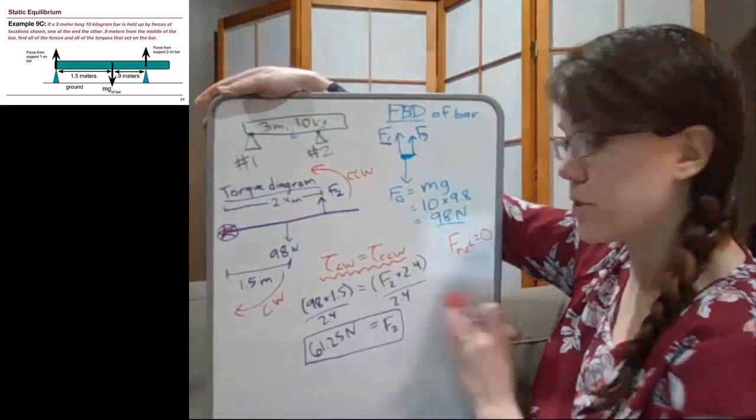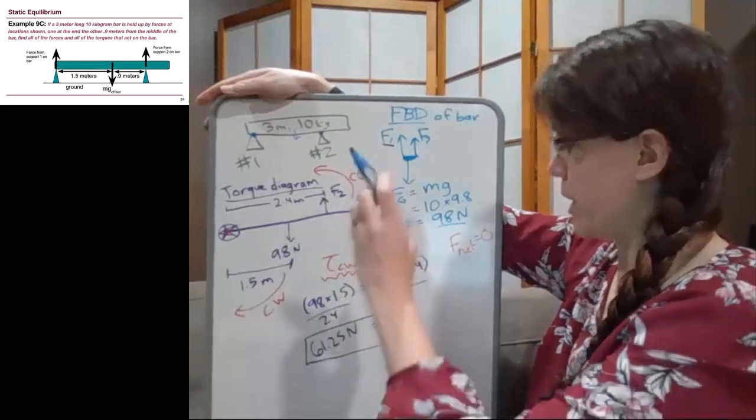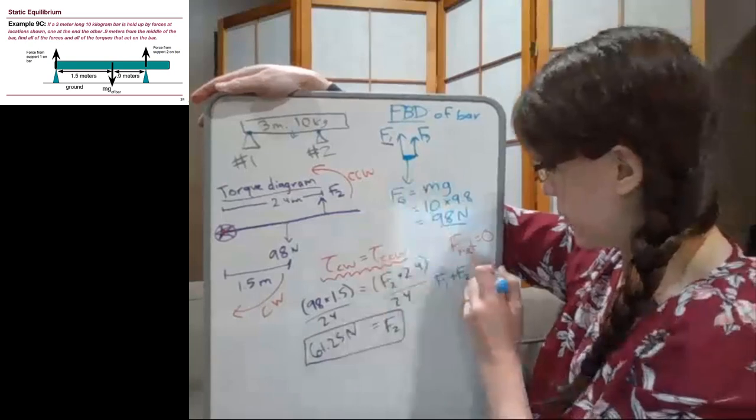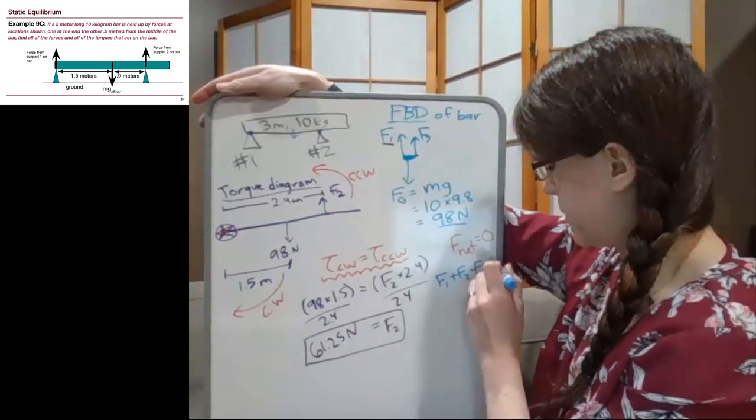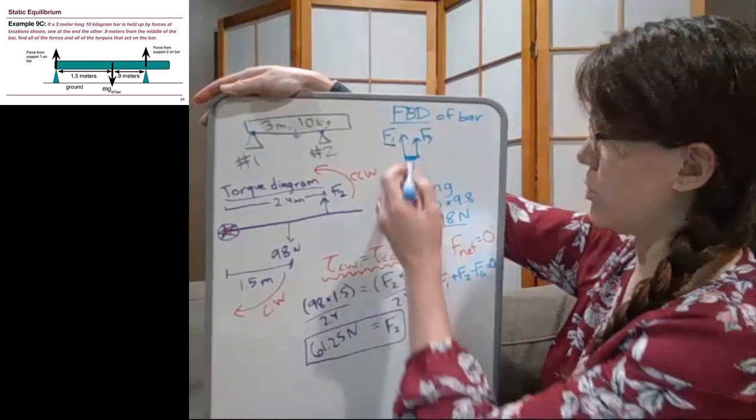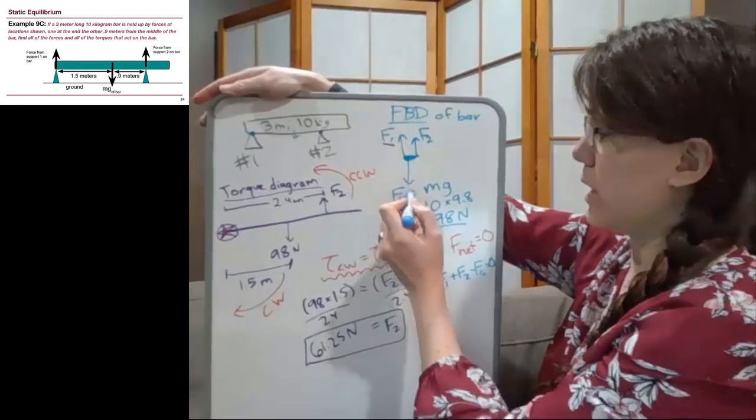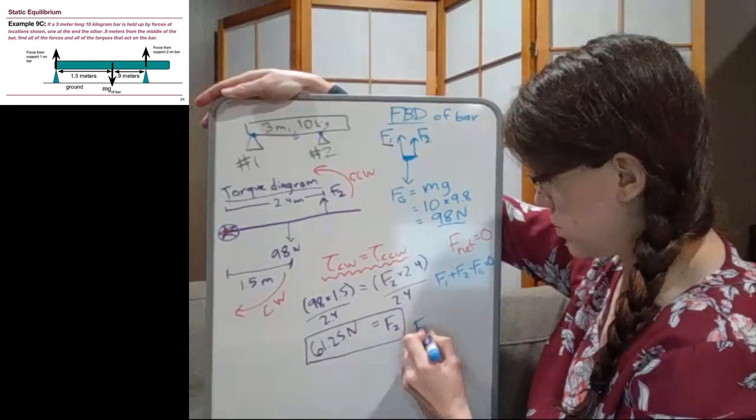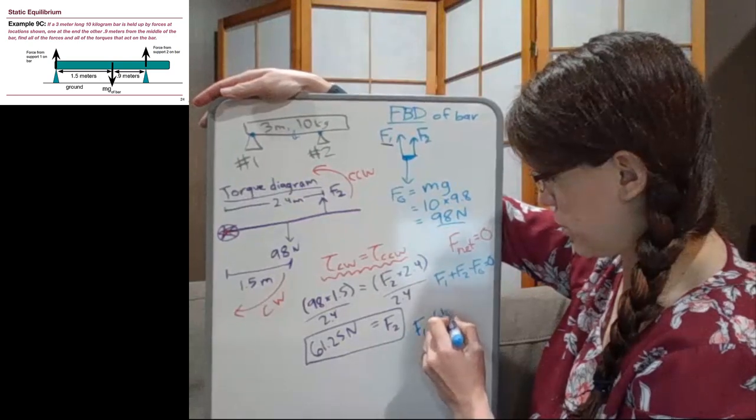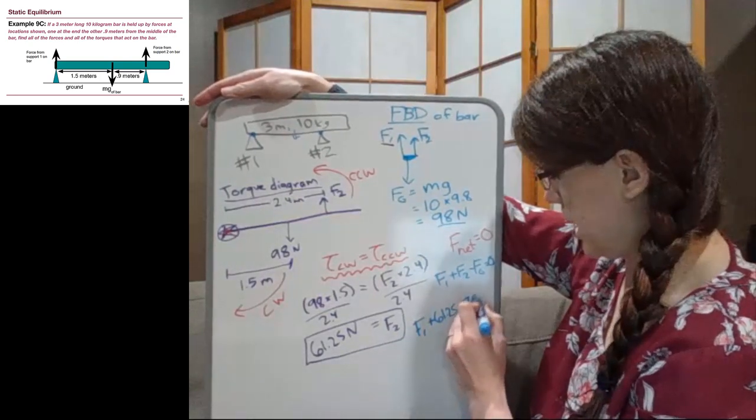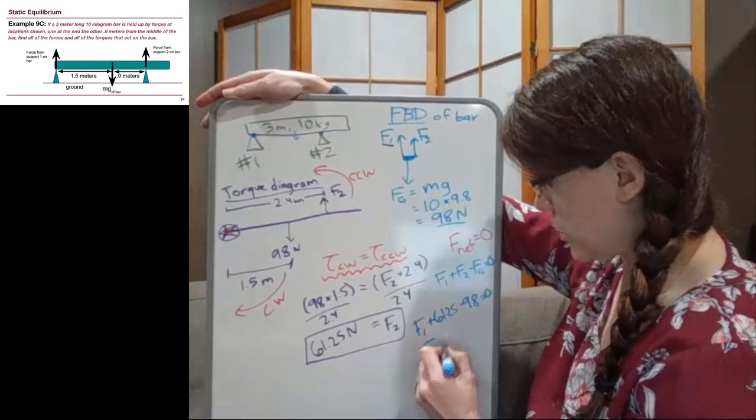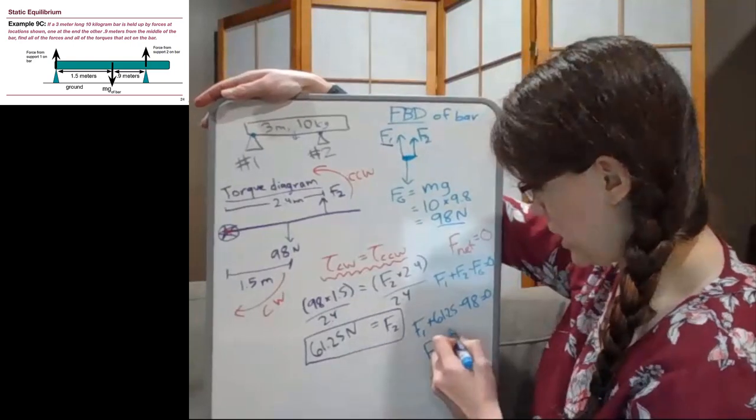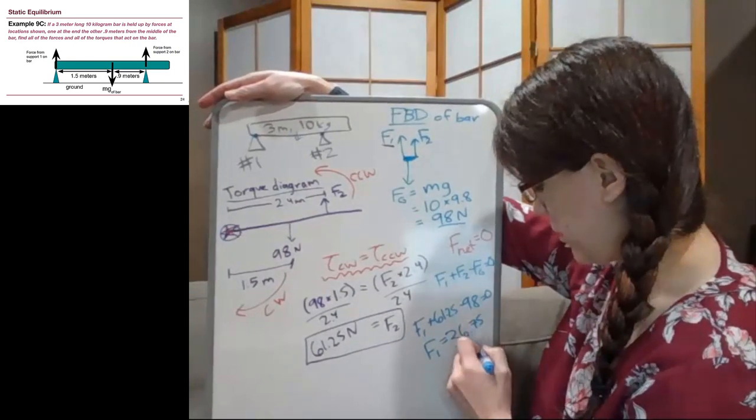And so we do that by considering the other condition for static equilibrium, which is that the net forces add up to 0. And so in that case, we take all of the forces that point up, so F1 plus F2 minus all of the forces that point down, Fg. It's just these two forces added together, and we subtract this one because it's in the opposite direction. So F1, which is what we're looking for, plus 61.25 minus 98 equals 0. And so F1 is 98 minus 61.25, and we get 36.75 newtons.